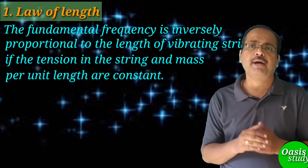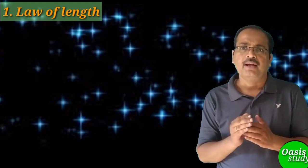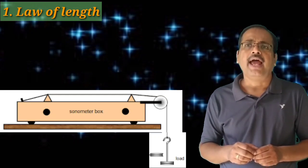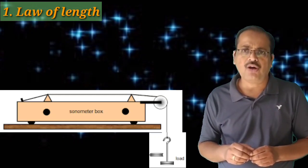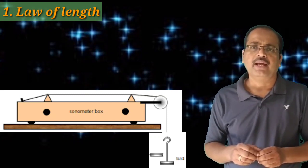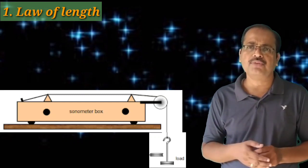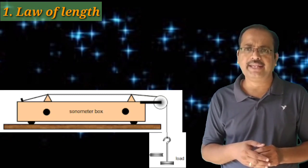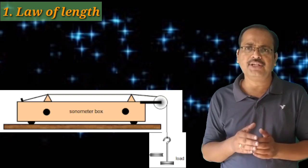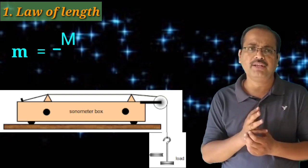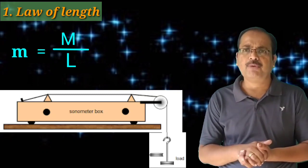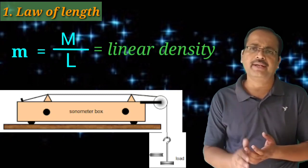This law can be verified by using sonometer. First of all, we measure the length of the string, that is L, and mass of the string, capital M. Therefore, by using these two terms, capital M and L, we can determine small m, that is the linear density. Small m is equal to capital M divided by L.